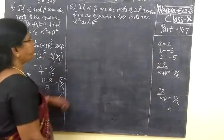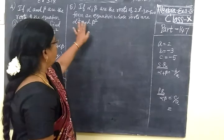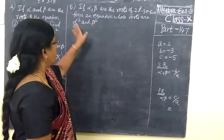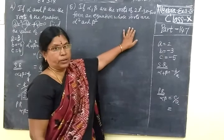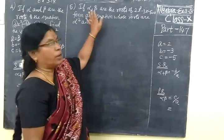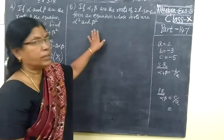Next you go. If alpha and beta are the roots are given, form an equation whose roots are alpha square and beta square. One equation is given, that root is alpha beta. One new quadratic equation is to be formed.